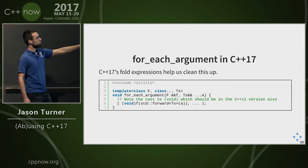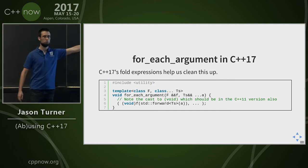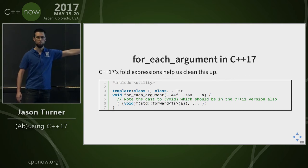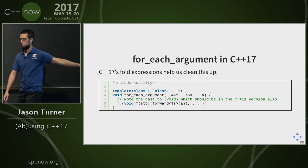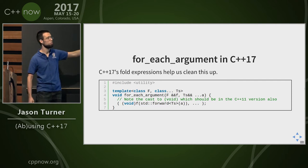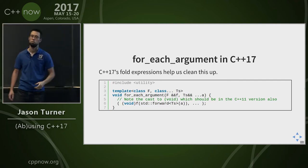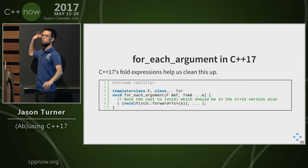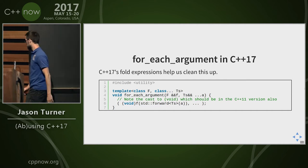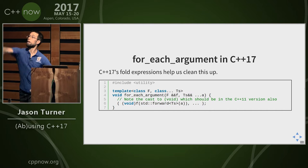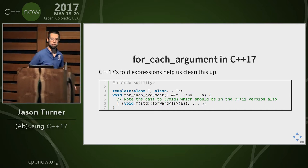Notice I have this void cast here. Who knows why? Because the comma operator could otherwise be overloaded and subvert what we're trying to accomplish.